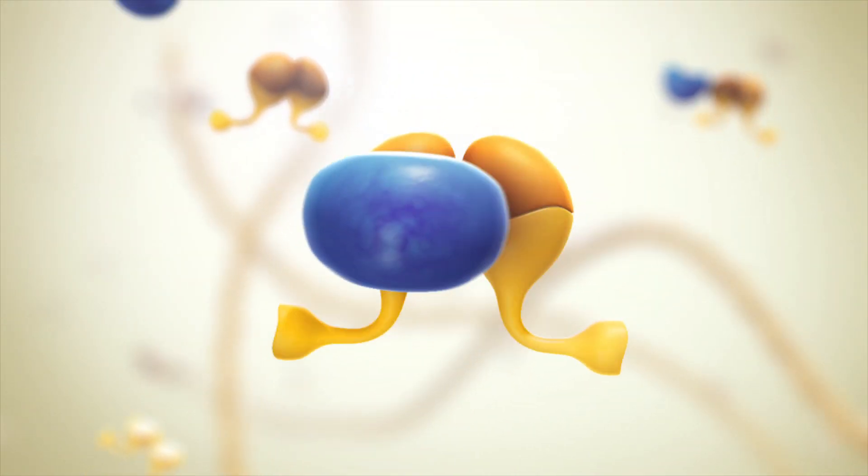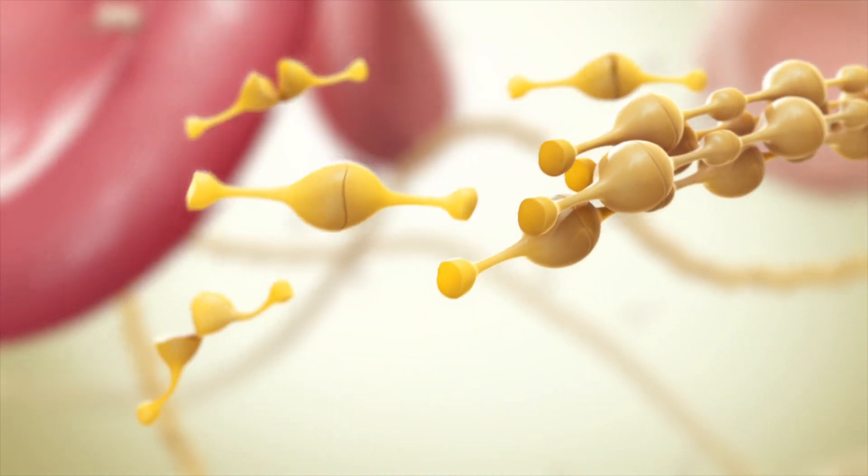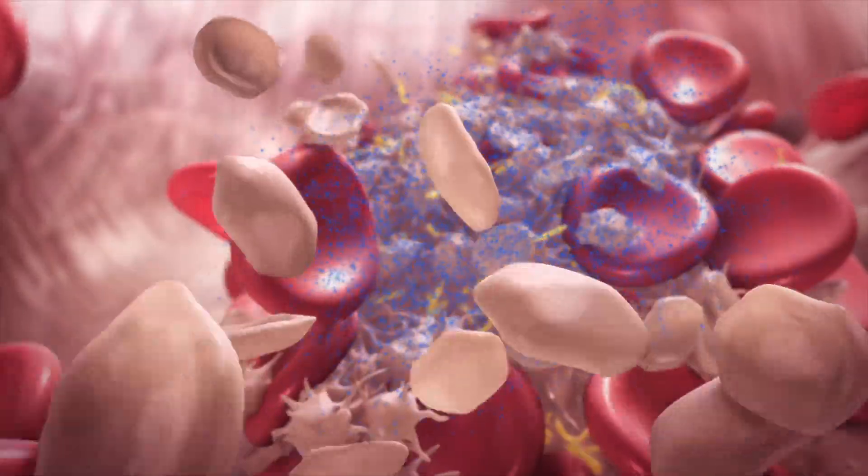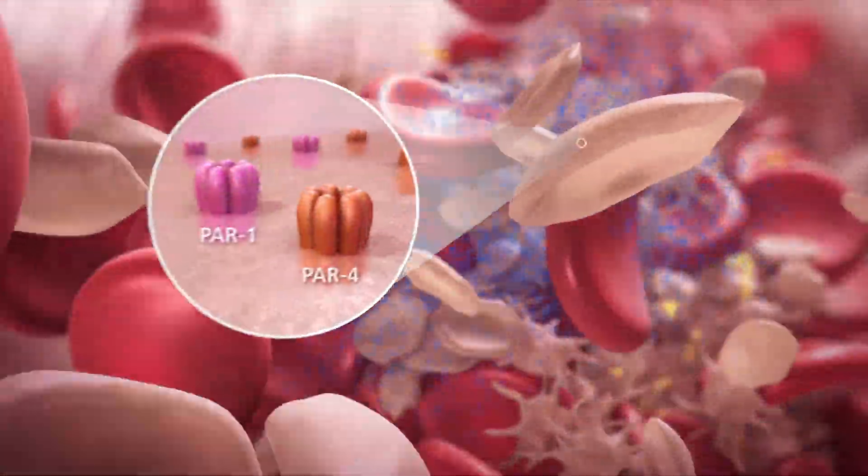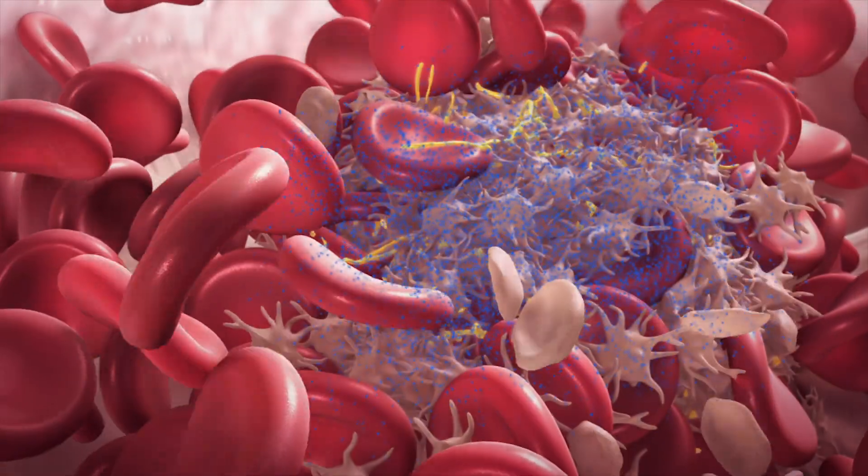Fibrin then assembles into strands. Thrombin also leads to further platelet activation via PAR receptors located on platelets, thereby increasing platelet aggregation.